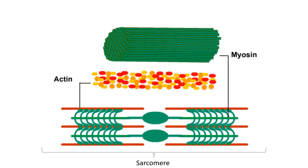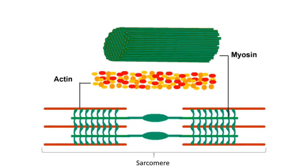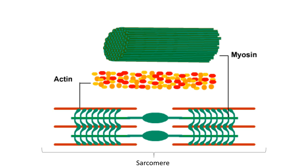Myosin and actin work as a unit, and they slide against each other to elongate the length of the sarcomere, which is what we perceive as stretching.